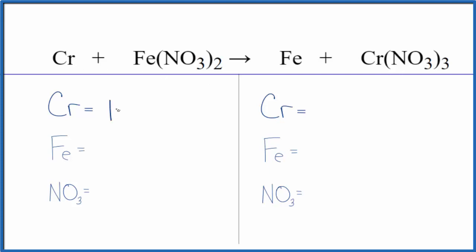We have one chromium and one iron, and then we have this NO3 here. This is a polyatomic ion called the nitrate ion. We have it here and then again the nitrate ion on this side, so it stays together in the reaction.